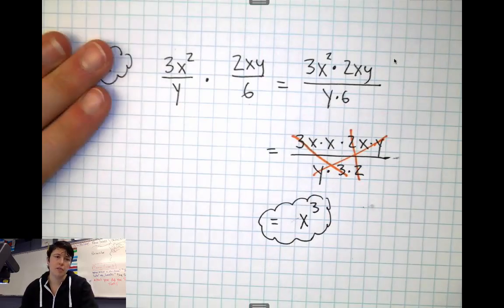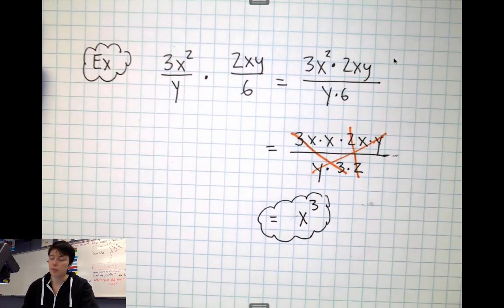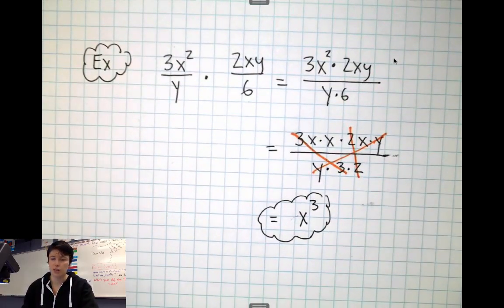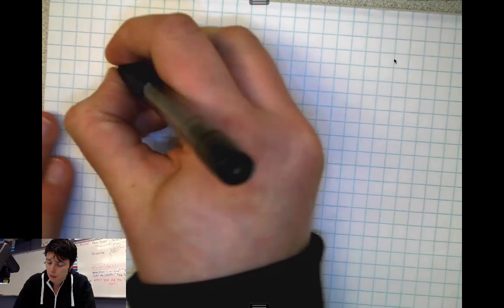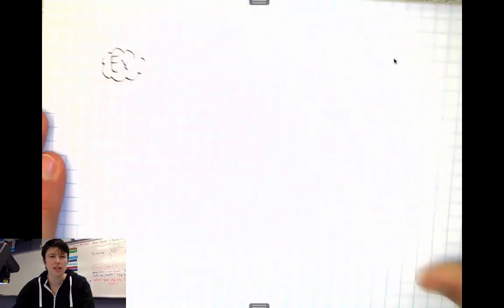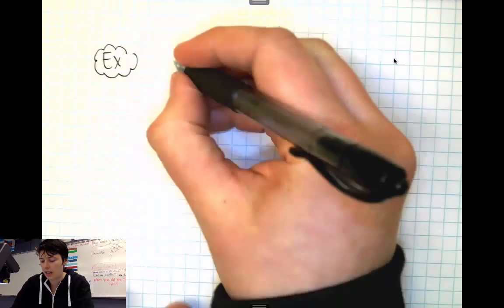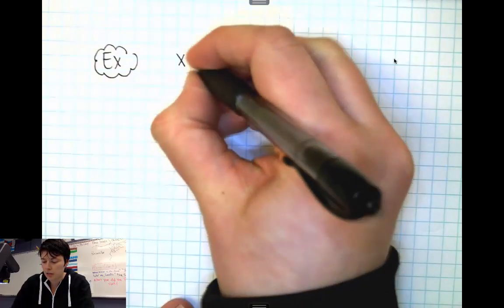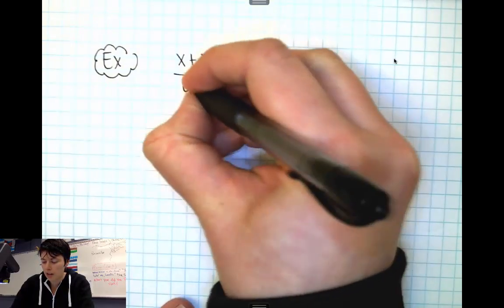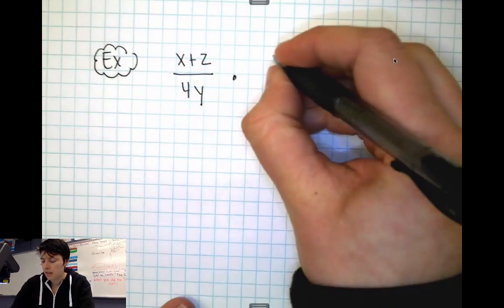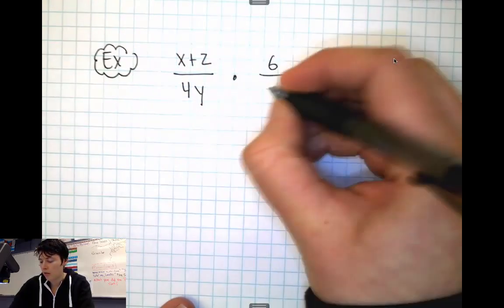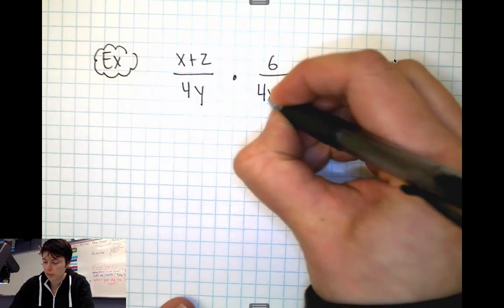Now these definitely get more complicated than these ones when you start putting an addition or subtraction sign into it as well. So let's look at an adding or subtracting problem. Like if I had (x+2)/(4y) and I'm multiplying it by 6/(4x+8).